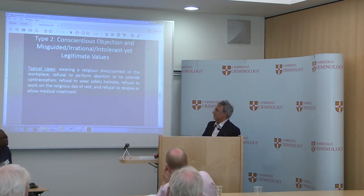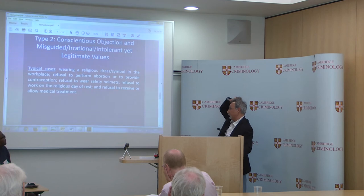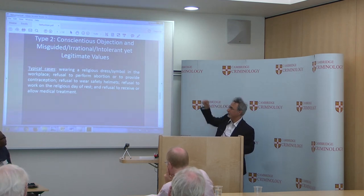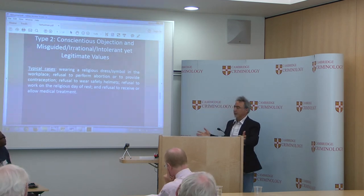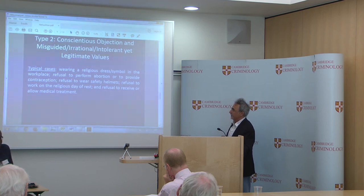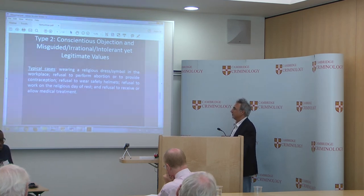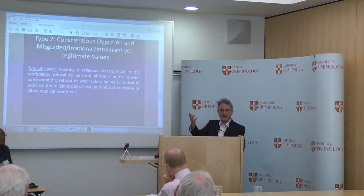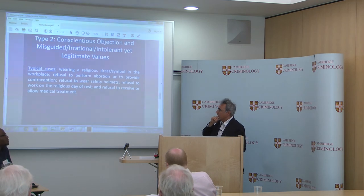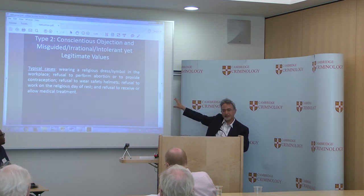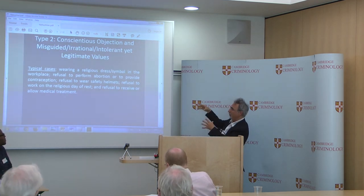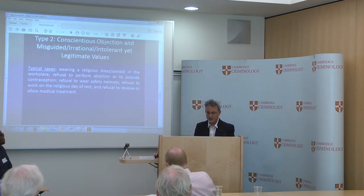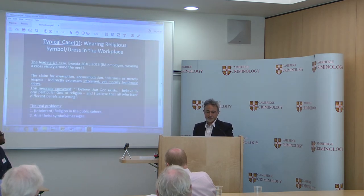As I promised, I will not have time to talk about religious dress but I will make a case about Type 2 cases, which is quite common — conscientious objection where we have misguided, irrational, maybe intolerant, but still legitimate values held by the conscientious objector. There is a long list of typical cases which fall within this category; I will focus on the case of abortion.